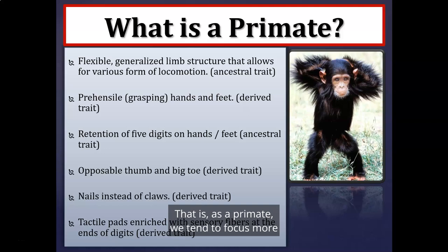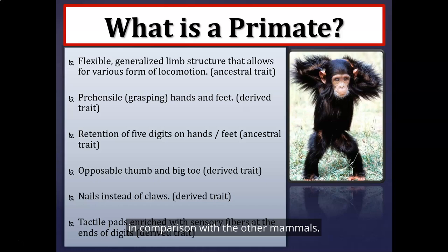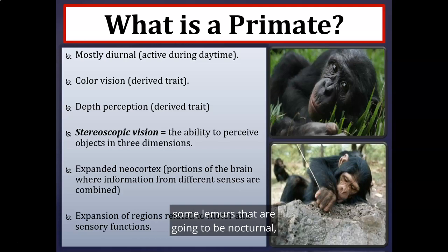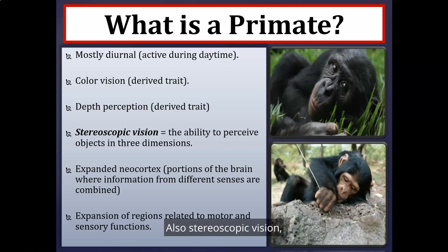As primates, we tend to focus more on the senses of vision and touch, compared with other mammals. Primates are predominantly diurnal — meaning most active during the day — though some lemurs are nocturnal. Primates have color vision, enhanced depth perception, and stereoscopic vision, which is the ability to perceive objects in 3D.